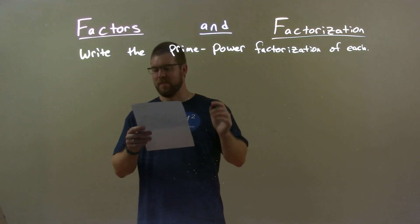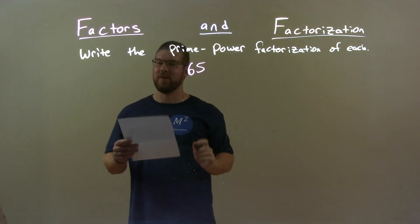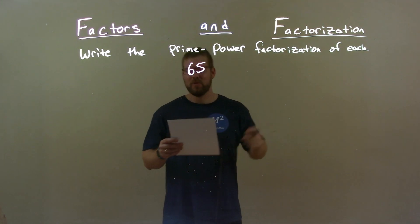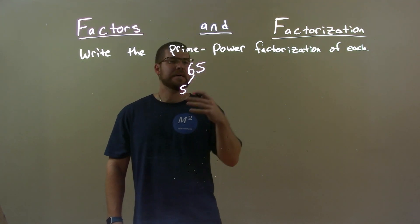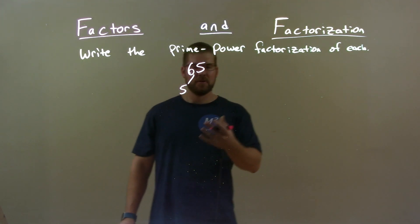If I was given this number, 65, we're starting off on a good foot here. Well, I know 65 is divisible by 5, but I don't really know off the top of my head what that is, so let me work through it.